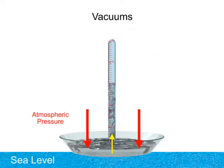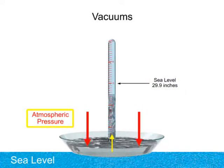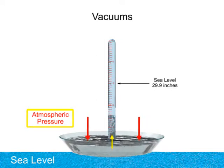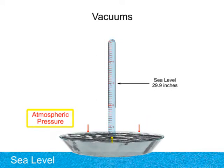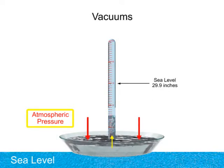At sea level, the elevation of mercury will stand at about 29.9 inches of mercury. As the atmospheric pressure decreases, the height of the mercury in the tube decreases. As the atmospheric pressure increases, the height of the mercury in the tube increases.